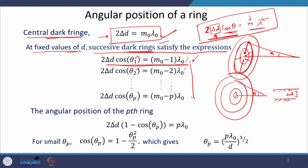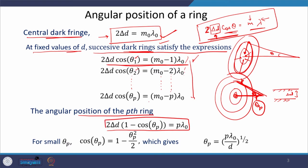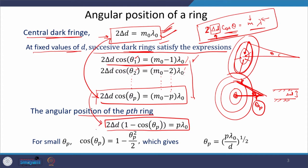To find the angular position of the p-th ring, we calculate the angular orientation of the central fringe and the angular orientation of θ_p, then subtract them. We subtract the condition for the central dark fringe from the condition for the p-th ring. This subtraction gives us the expression for the position of the p-th dark ring.